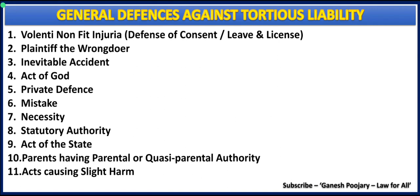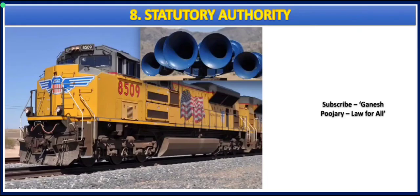The best example for statutory authority as a general defense under tort is a train and railway track. To construct a railway track, if any private land needs to be used, that will be done — the law gives such provisions, and you will get compensation only if legal provisions are available for that. There will also be vibration, smoke, and noise when trains are passing, and you cannot bring a case against these authorities unless there are provisions supporting your case.